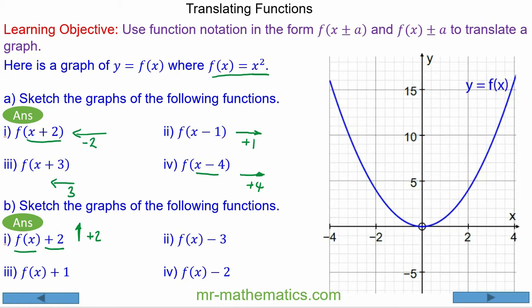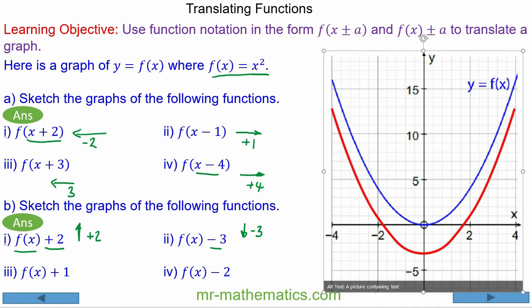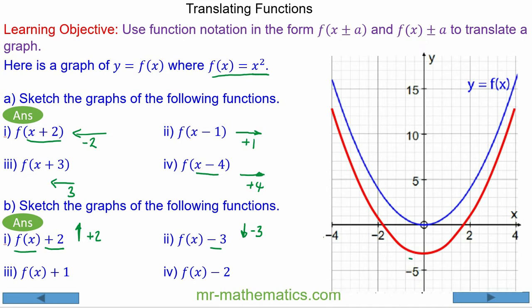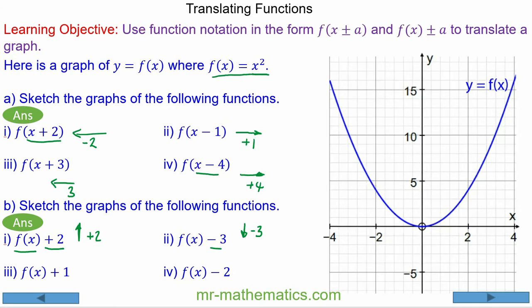For the next one, we're going to move the function vertically downwards by 3 units, so you can see the turning point is now at y equals negative 3 and x equals 0.